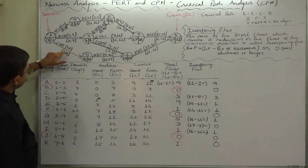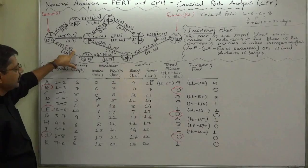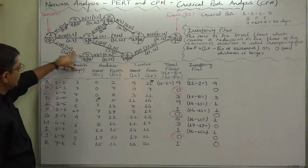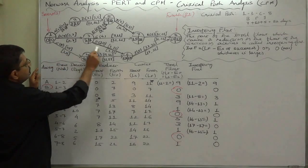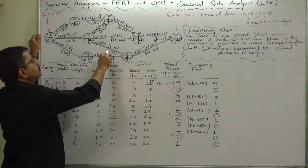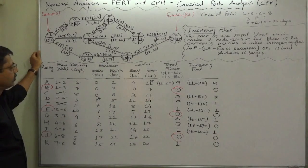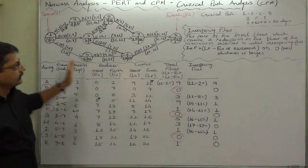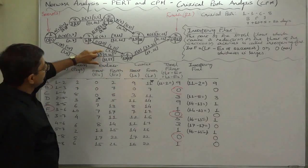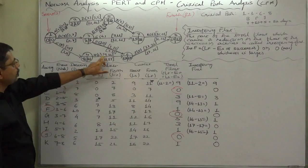So now 3 plus 8, its latest finish time will be 11. And hence the earliest start time of H will be 11. So it affects and that will change the float of H also, and so on.